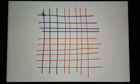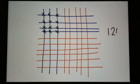That's worth 100: 100, 200, 300, 400, 500, 600, 700, 800, 900, 1000, 1100, 1200. So my blue intersections are worth 1,200.